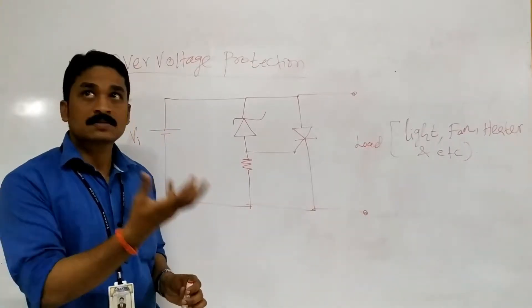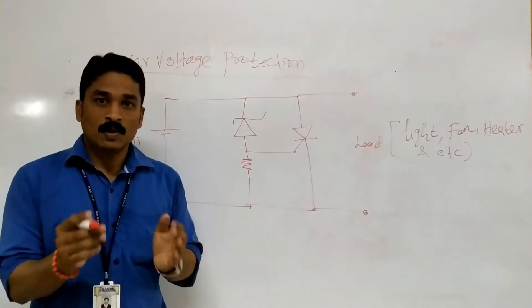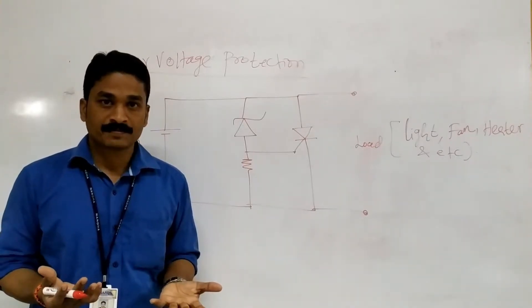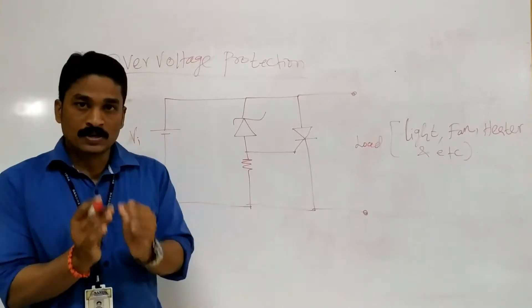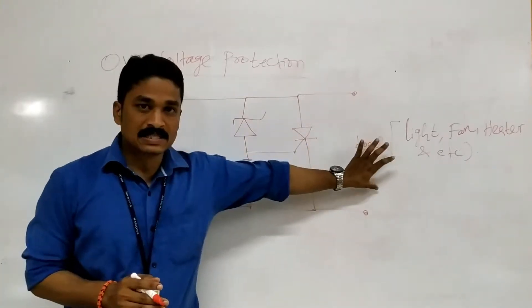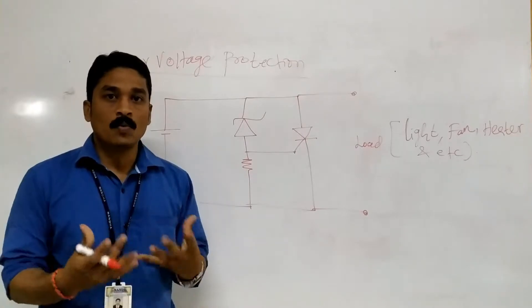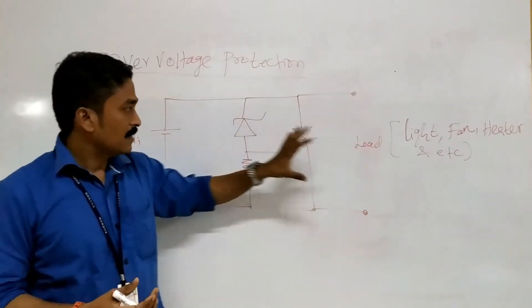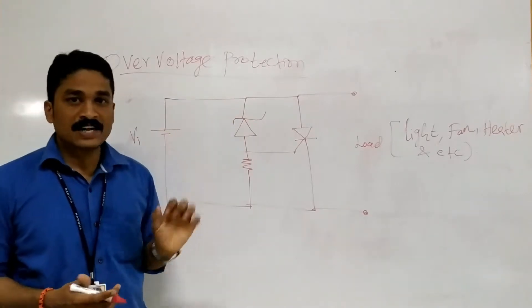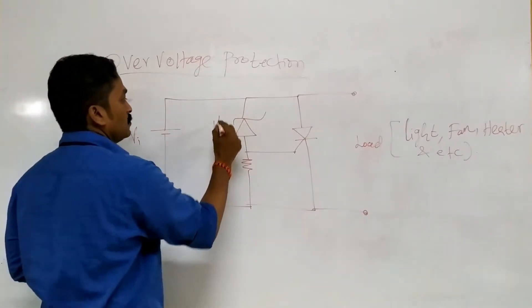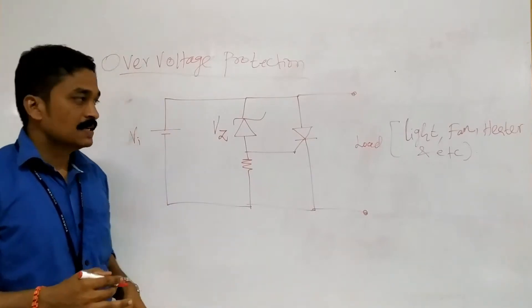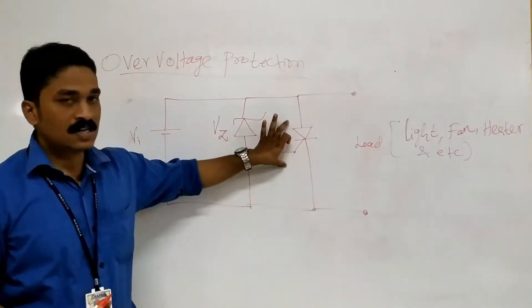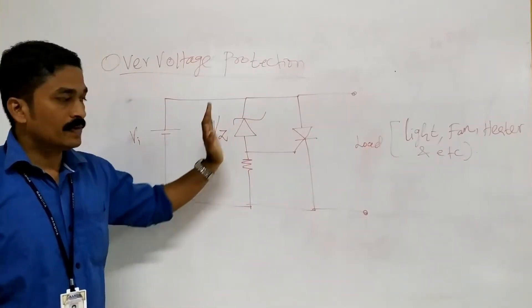For example, a bulb works within a particular temperature range. Once that temperature is exceeded, the bulb will burn. So we need to protect these devices from overheat or over-voltage. A Zener diode can be used as a voltage regulator, but for higher power devices, an SCR can also be used for over-voltage protection.